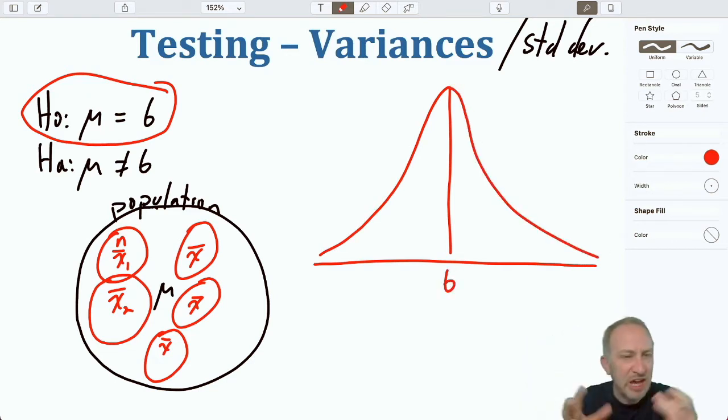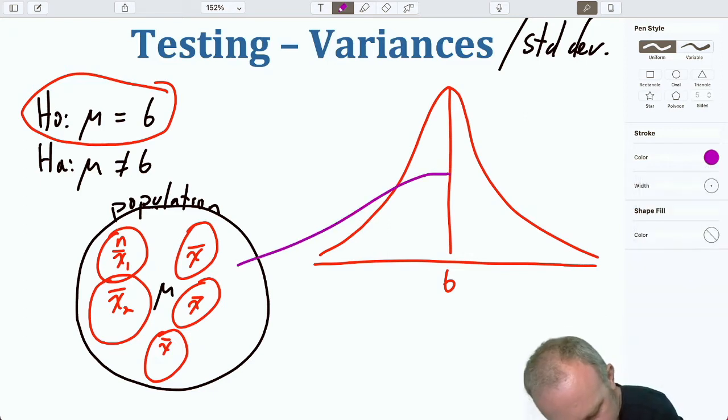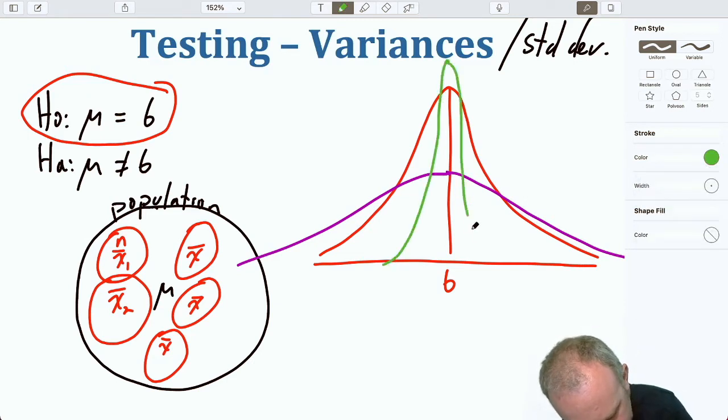If the null is in fact true that has an average of 6, well this distribution that I've just drawn has an average of 6. But this distribution here also has an average of 6. And this distribution here also has an average of 6.